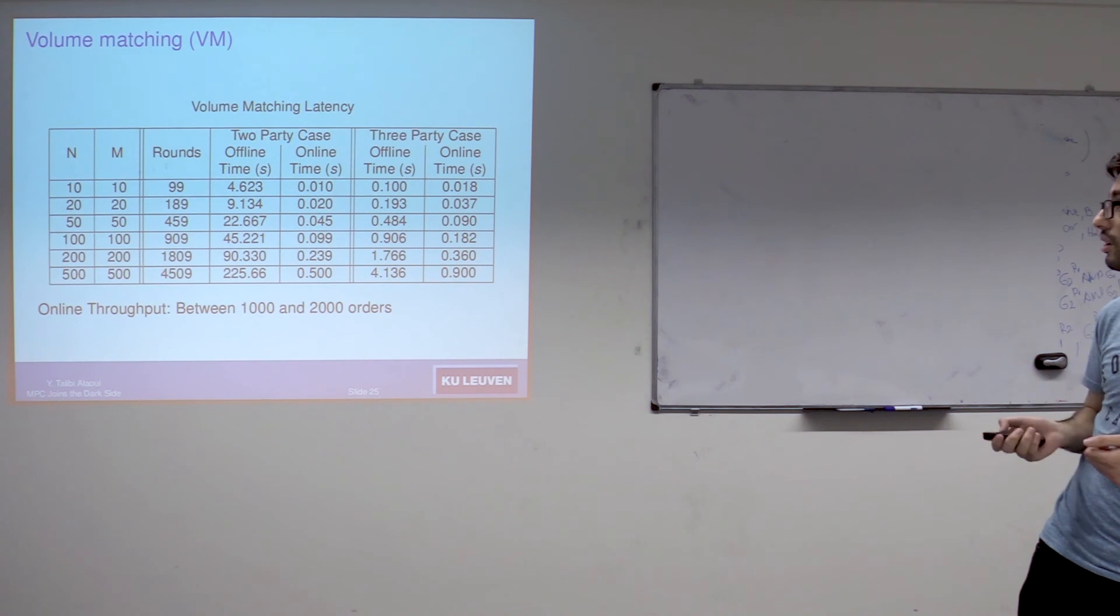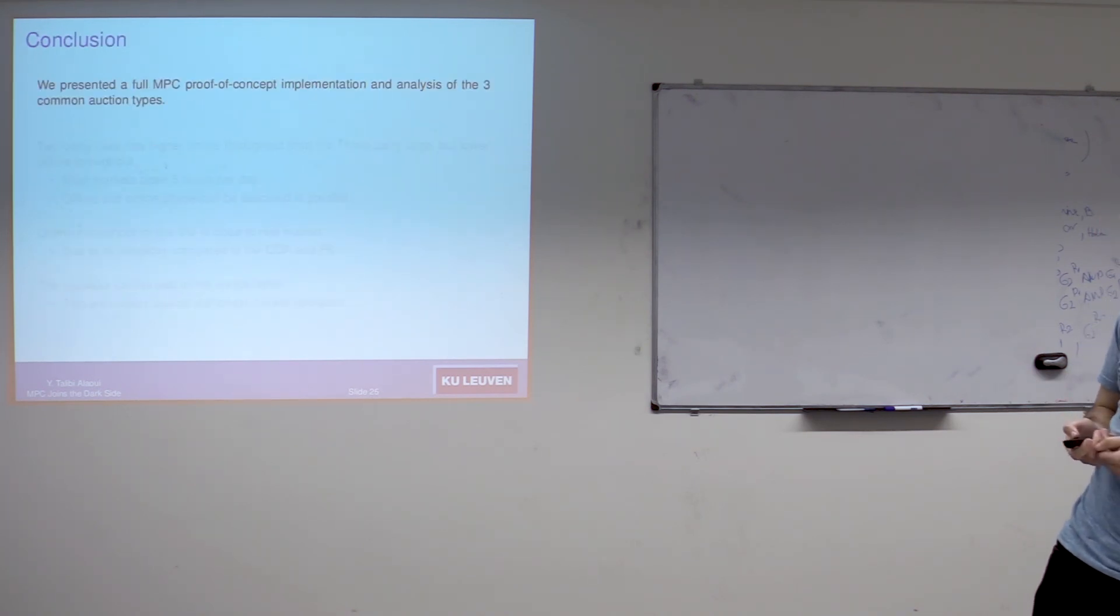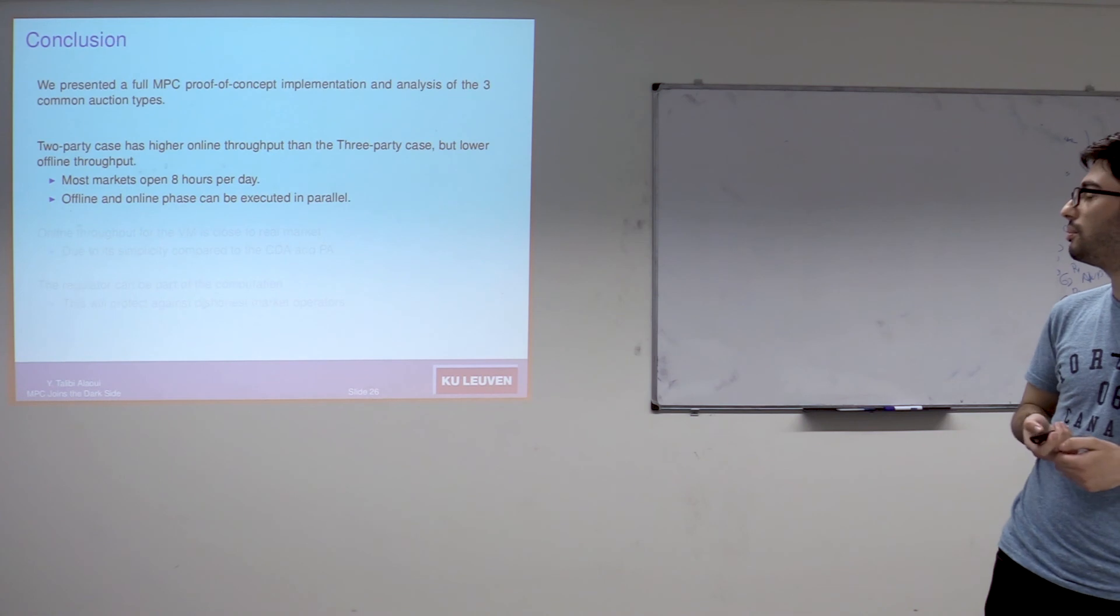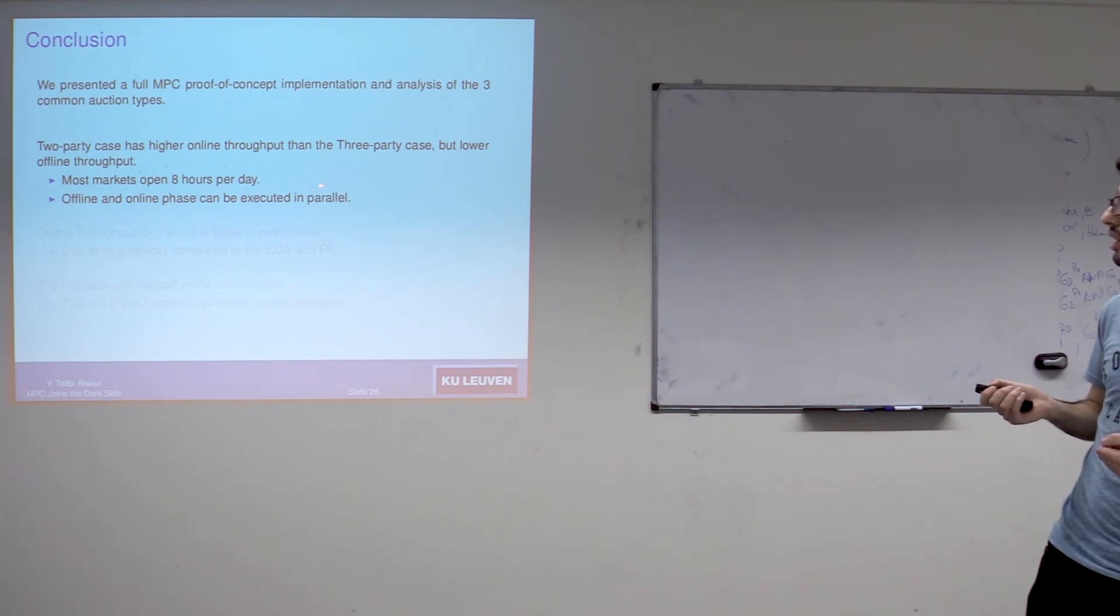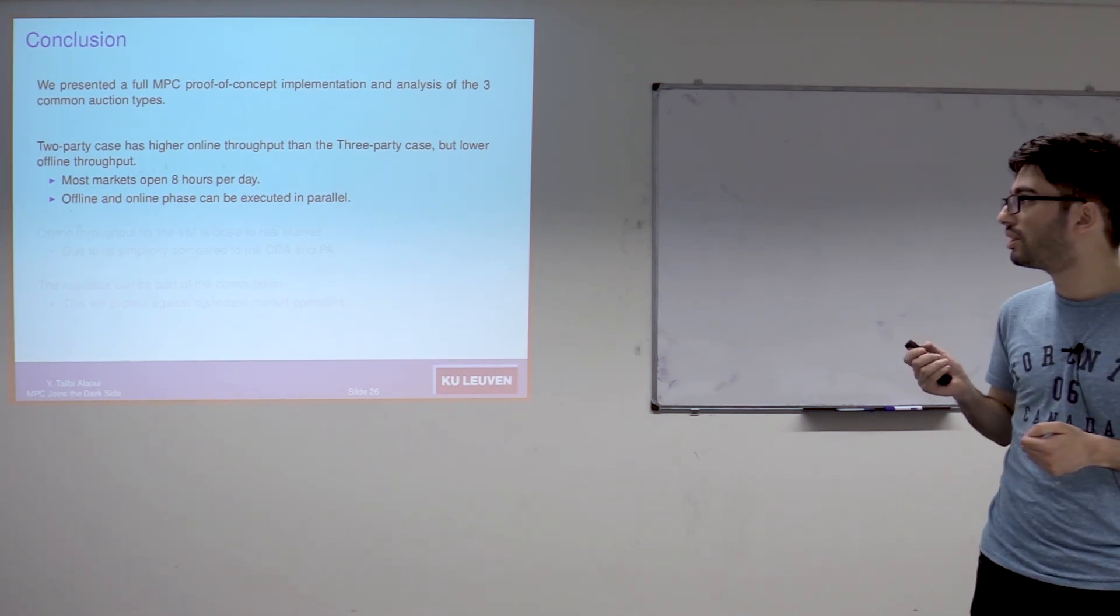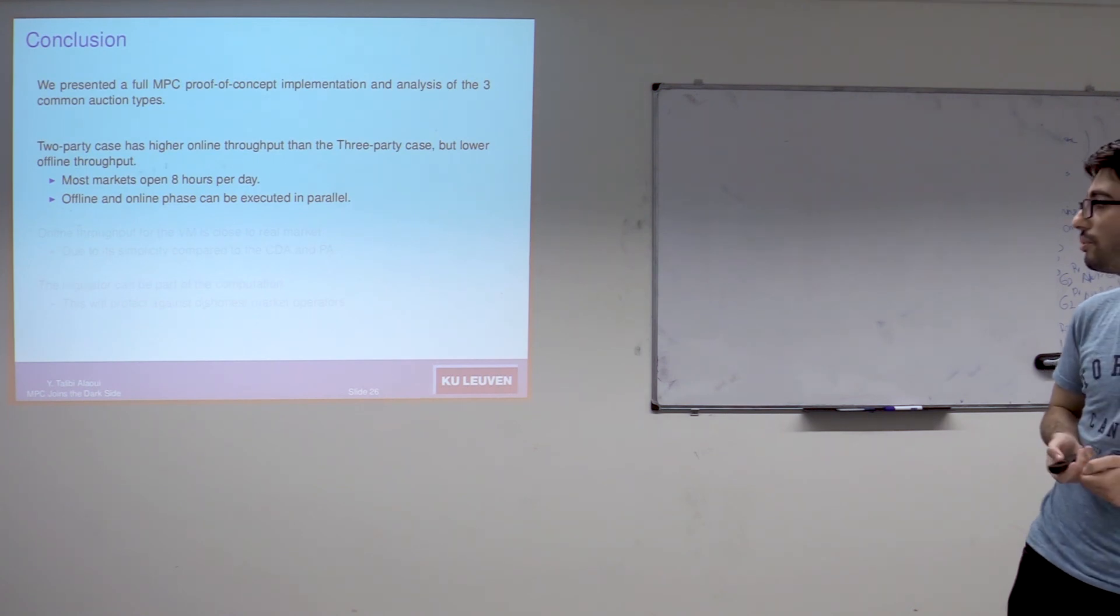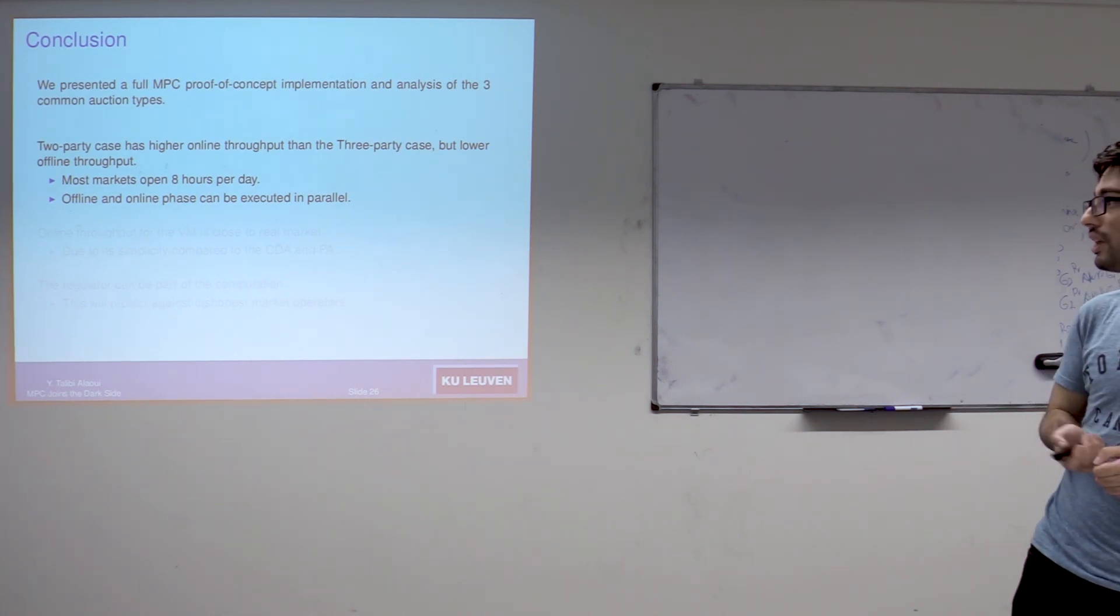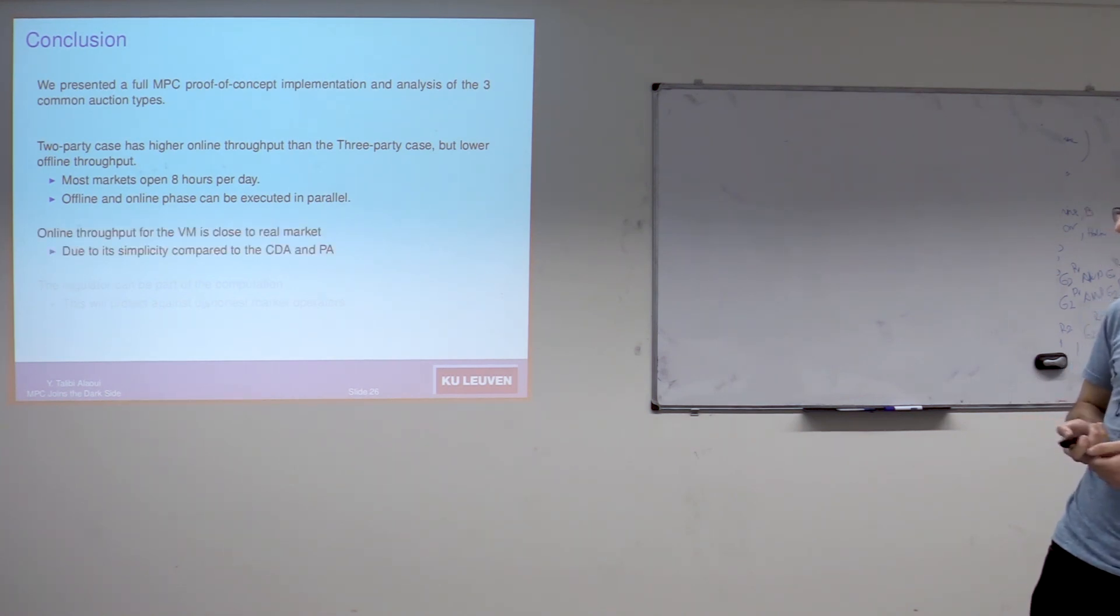To conclude, in this paper we presented a fully MPC proof of concept of the three common auction types. If we compare between the two settings we considered, we found that the three-party case is slower in the online phase but faster in the offline phase. But one thing to note is that one should not worry about the offline phase because most markets open only eight hours per day, so the offline phase can be done overnight. Besides, the offline and online phase can be executed in parallel. If you want to worry about something, it should be the online phase.